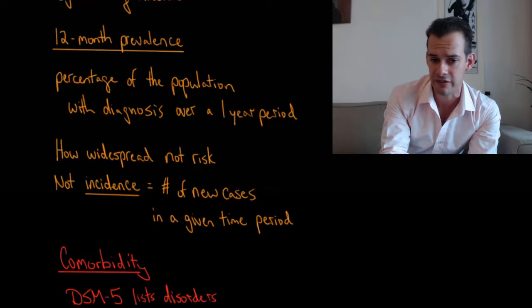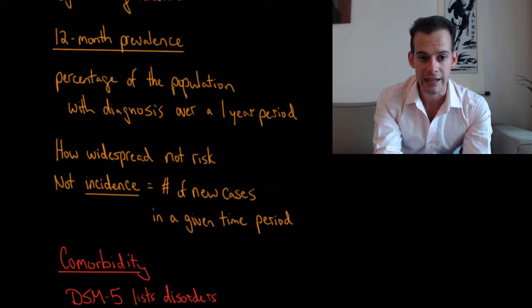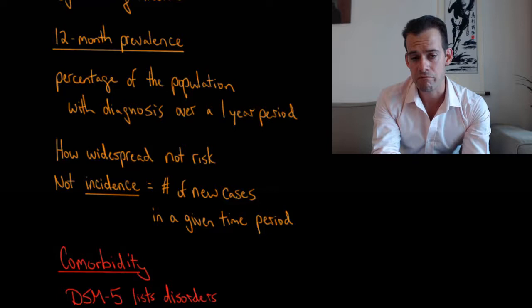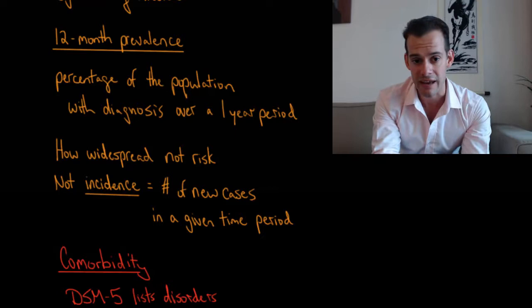It's also important to separate prevalence from incidence because incidence refers to the number of new cases over a particular time period. So the incidence over the course of a year might be very different from the prevalence. And one way you can think about that is if you imagine an infection. So let's say we have some outbreak of this infection that affects many people. And so there's very high incidence, they all get diagnosed in the same year, they're all new cases of this infection.